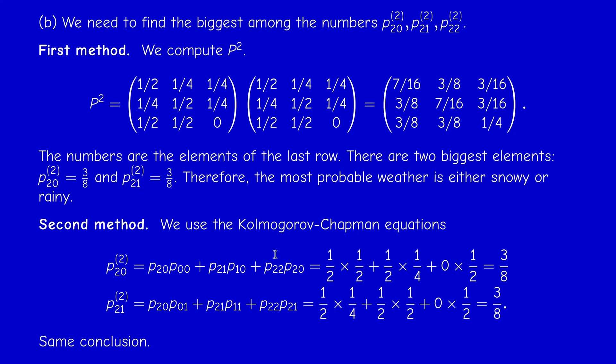So there are actually two most probable weather outcomes: snowy or rainy. Don't worry if you make such a mistake in the exam — if the exercise is worth ten points you will get at least nine points if all the reasoning is correct, as I will follow your logic.